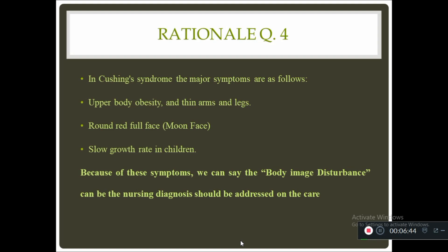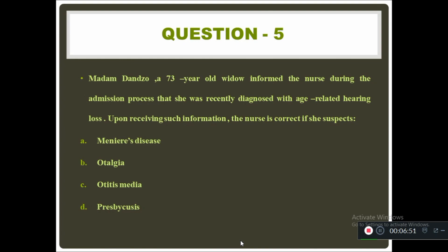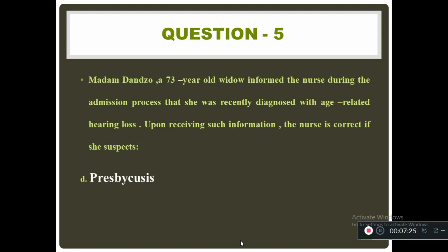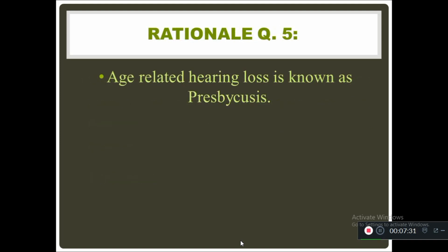Question five: a 73-year-old widow informed the nurse during admission that she was recently diagnosed with age-related hearing loss. Upon receiving this information, the nurse suspects — Meniere's disease, otalgia, otitis media, or presbycusis. The correct answer is presbycusis, which is the medical term for age-related hearing loss.